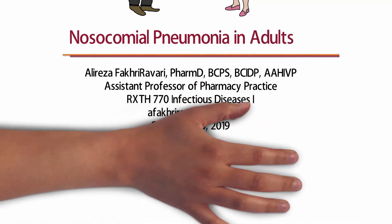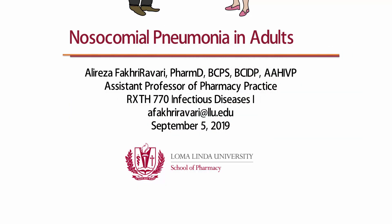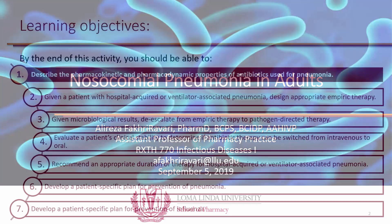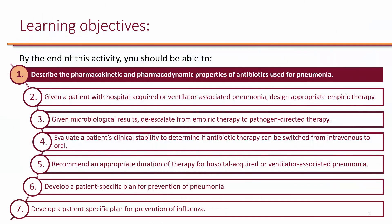I'm Dr. Fakir Averi and this is Influenza and Pneumonia Day 2. So far we have looked at the life cycle of influenza and mechanism of action of endonuclease and neuraminidase inhibitors as well as treatment of influenza. We also distinguished between different types of pneumonia and looked at treatment of community-acquired pneumonia.